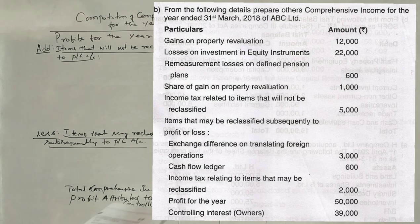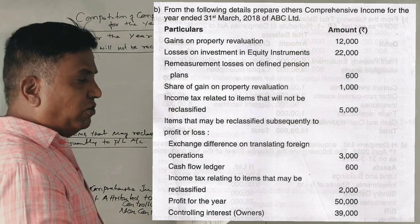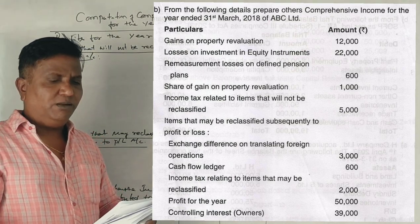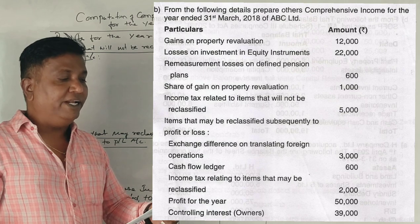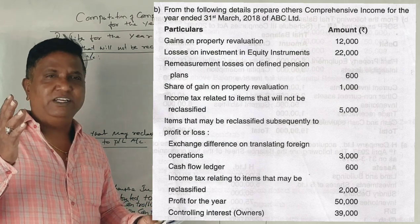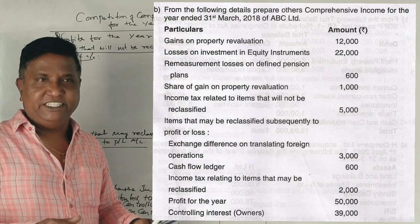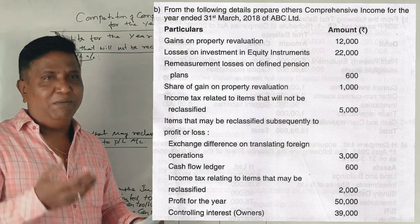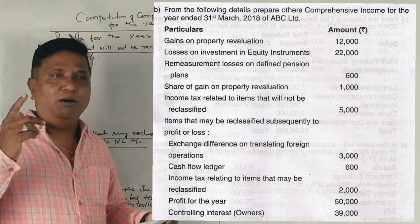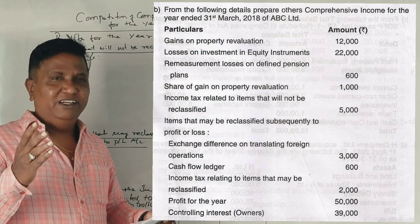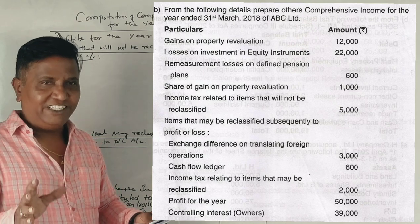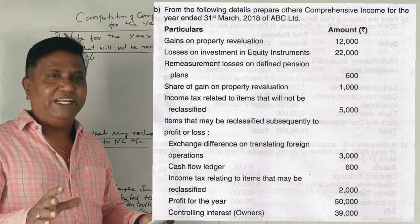Guys, in 2017 there is a comprehensive income statement. What is the difference between a comprehensive income statement and a regular income statement?